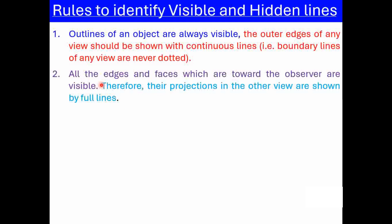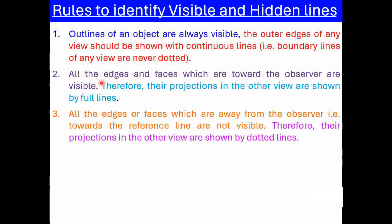As per the position of the observer or the viewpoint, the edges and faces which are nearer to the observer are always completely visible. Rule number 3: All the edges or faces which are away from the observer in a particular view — that is, towards the reference line — are not visible. Such edges are represented with a dashed or dotted line.